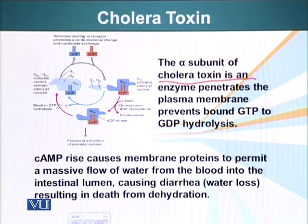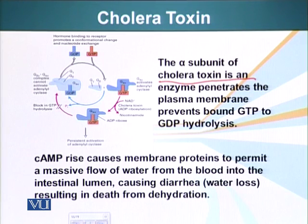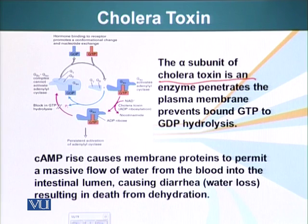Remember that G proteins are initially bound to GDP. Once activated, they exchange GDP for GTP, and the alpha subunit dissociates. The dissociated alpha subunit, bound to GTP, has a short time window in which it converts GTP into GDP and becomes inactive. During this window, it can activate adenyl cyclase.